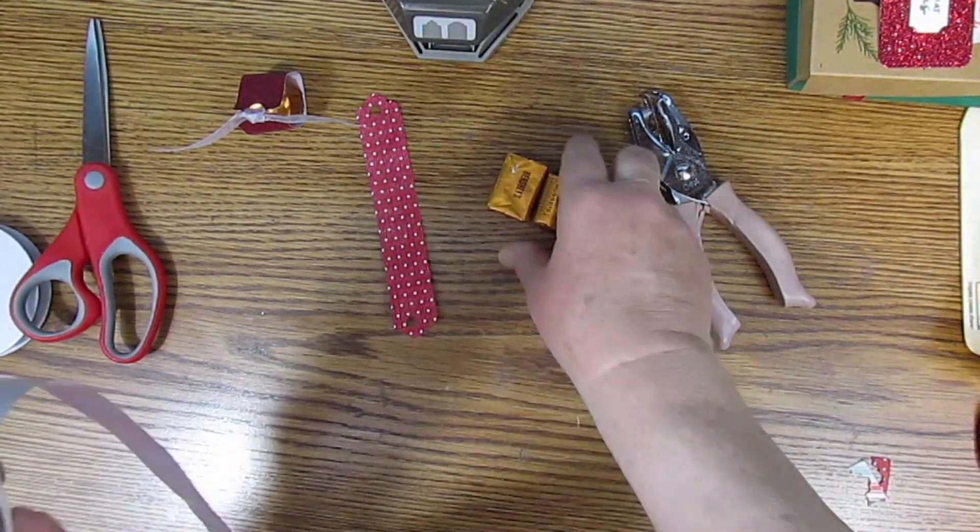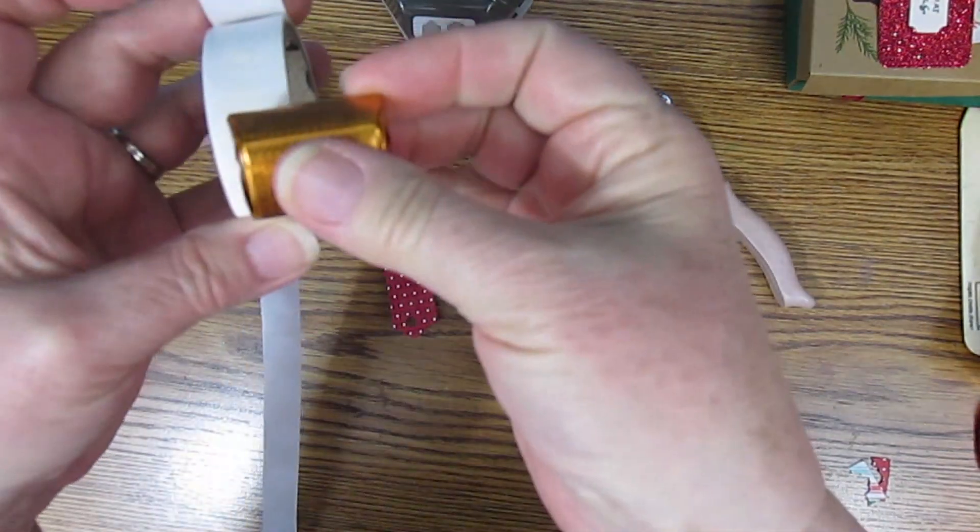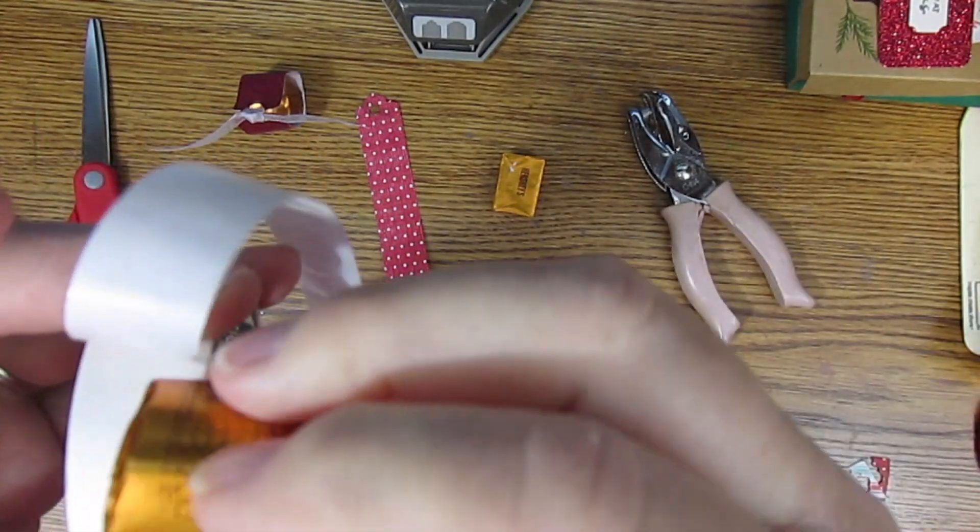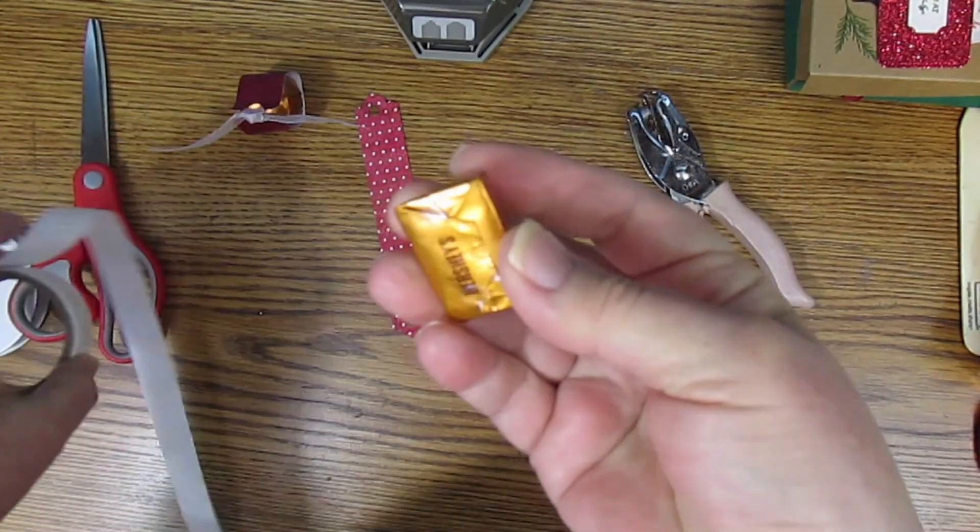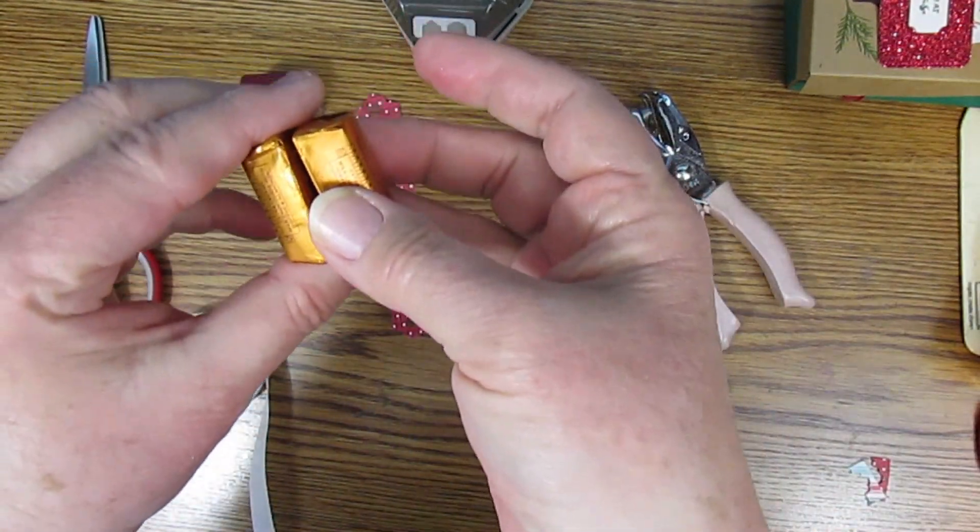Then you'll get glue dots and put a couple on the back of one of the candies. These are Hershey's Nuggets. They come in quite a variety of flavors this time of year and then stick them together.